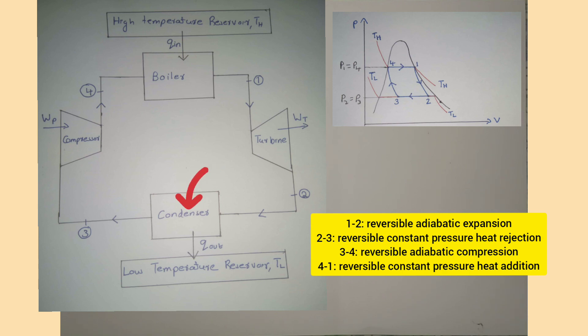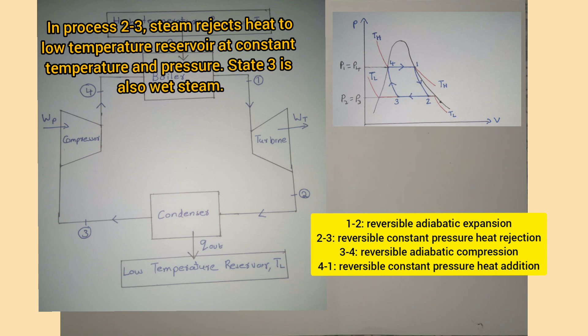The steam then flows through a condenser. Here the steam rejects heat QL to the low temperature reservoir at temperature TL. More vapor molecules in the steam condense to liquid at constant temperature and pressure. This is process 2 to 3. State 3 is also wet steam, but it is near the saturated liquid line, as you can see in the PV diagram.